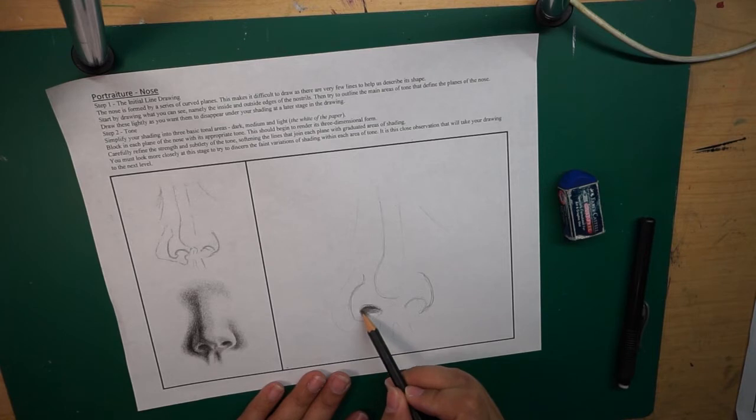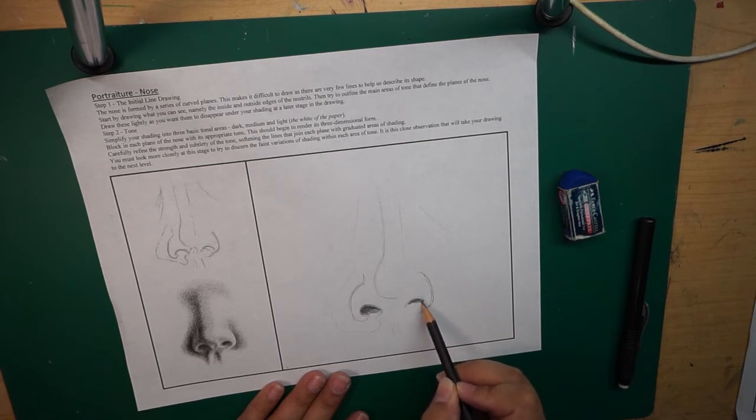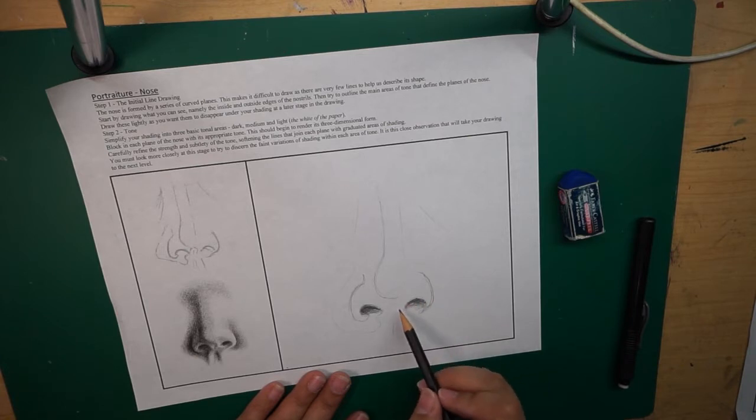So I started shading the darkest part which are the nostrils, but notice that inside the nostrils it's dark but it starts to get lighter down at the bottom of the nostrils. So make sure that you're not just covering the nostrils with this deep dark hole, it does get lighter at the bottom.